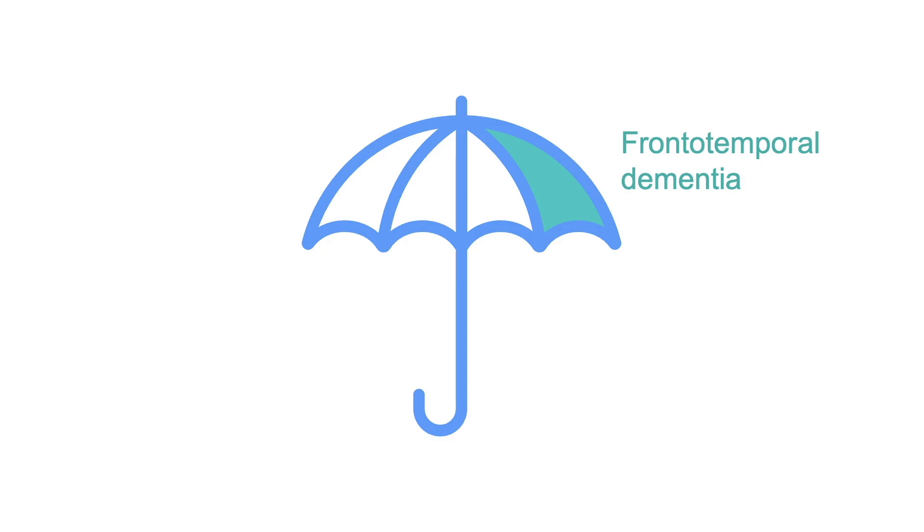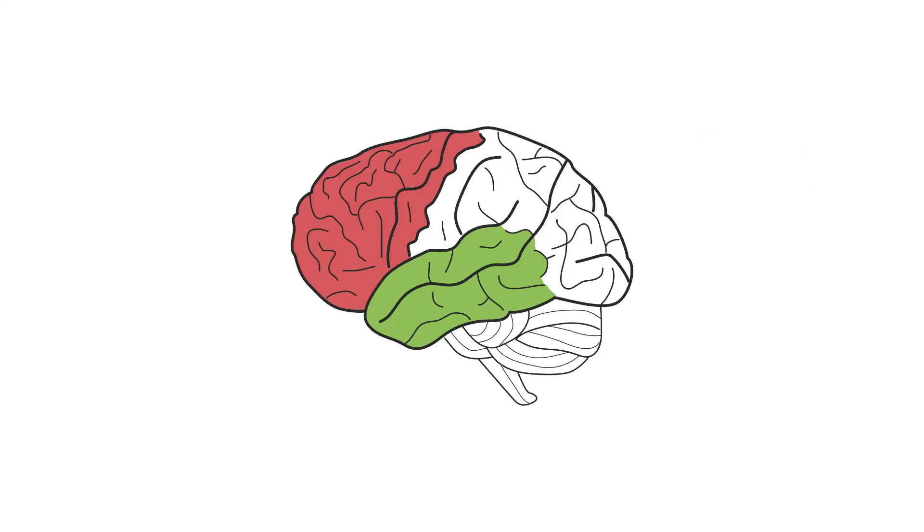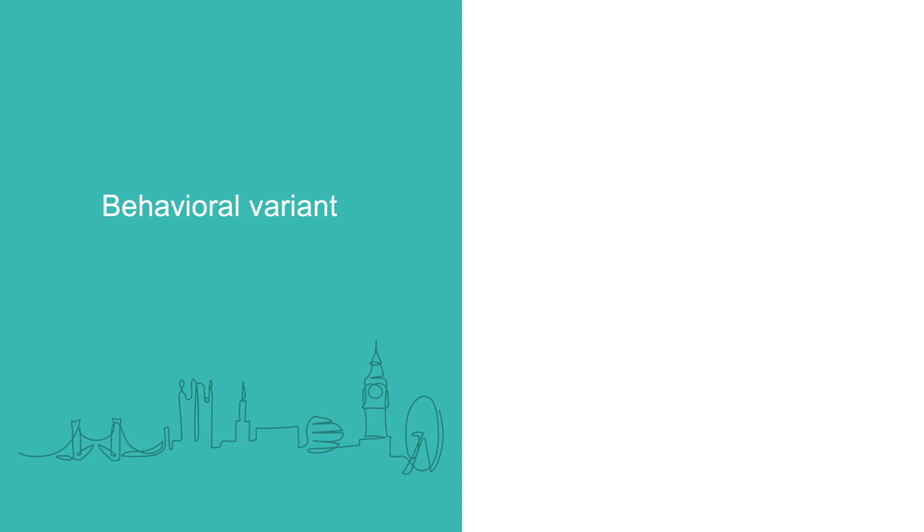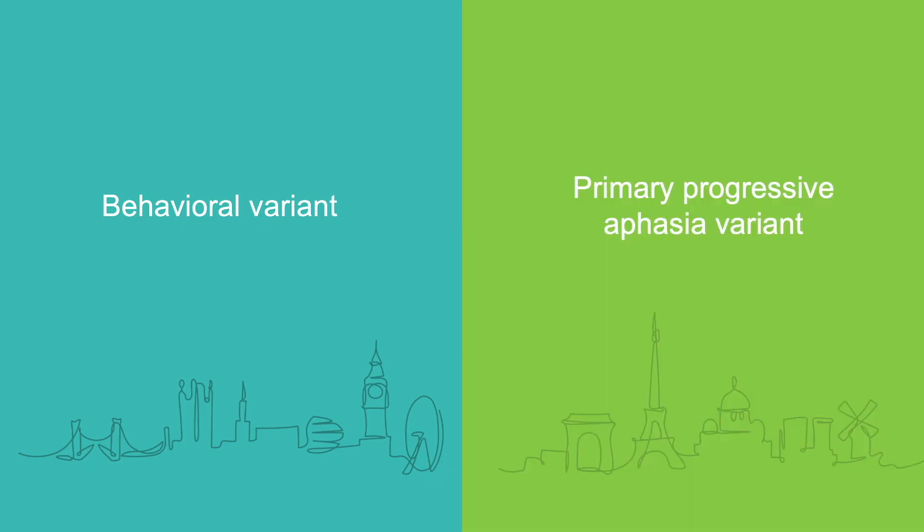The last form of dementia we will review is frontal temporal dementia, or FTD, which is caused by the atrophy of the frontal and temporal lobes of the brain. It is what I call a tale of two dementias because it involves two distinct subtypes: the behavioral variant and the primary progressive aphasia variant.